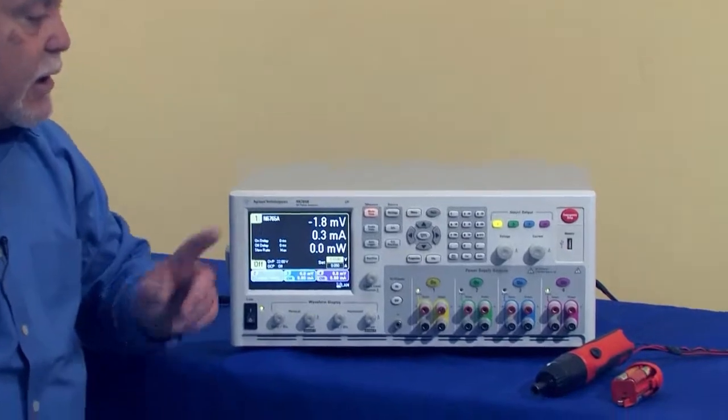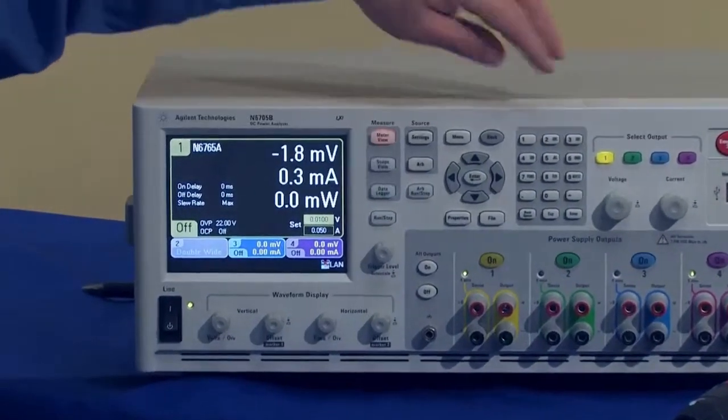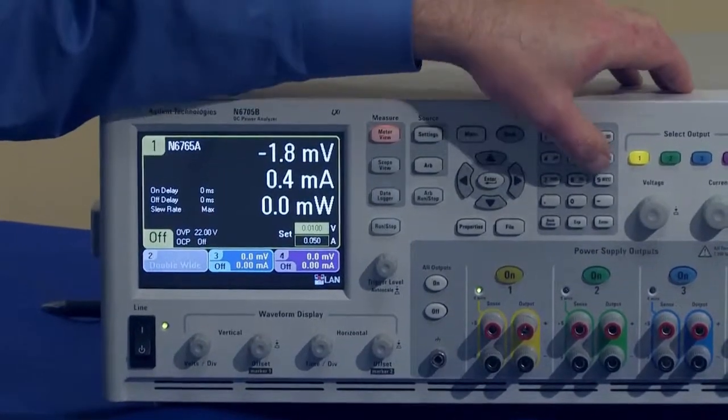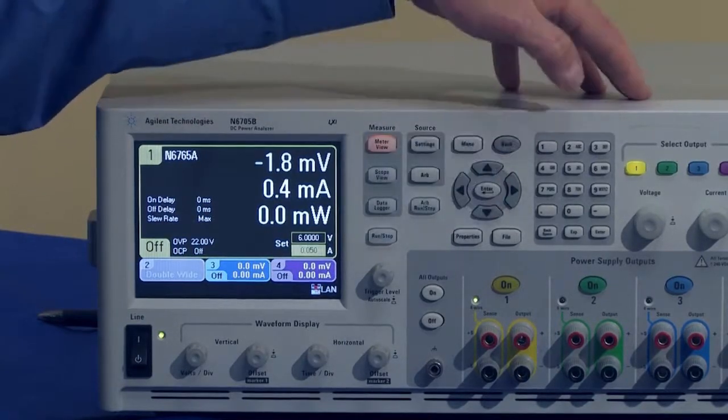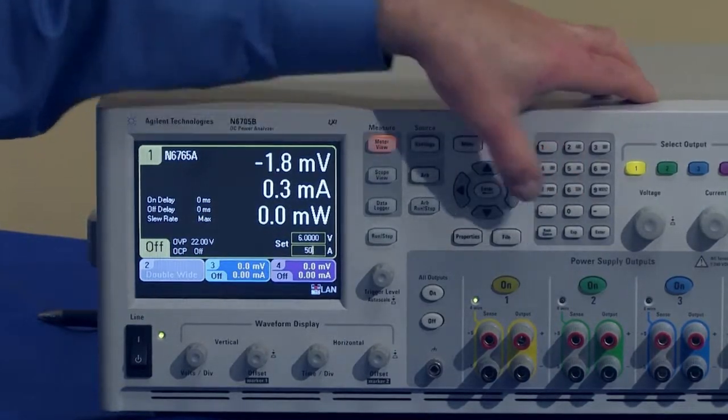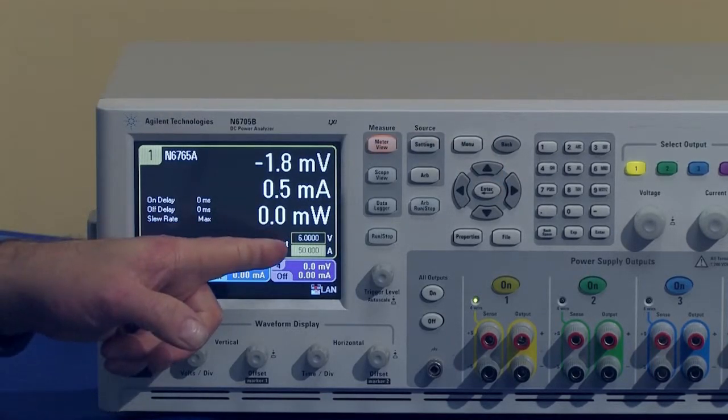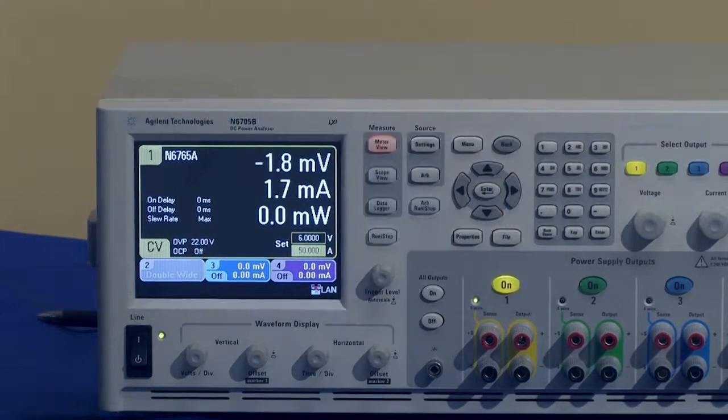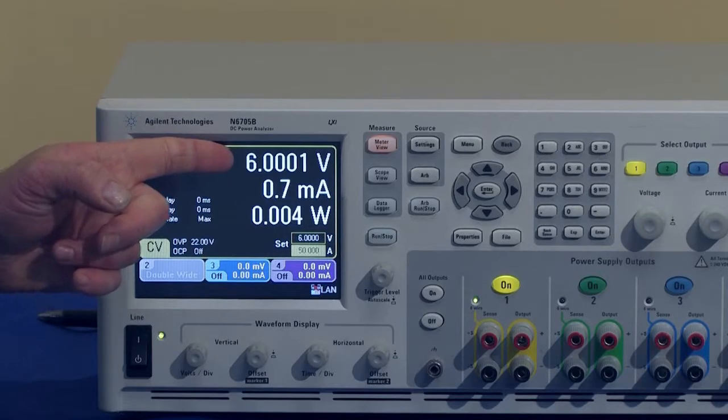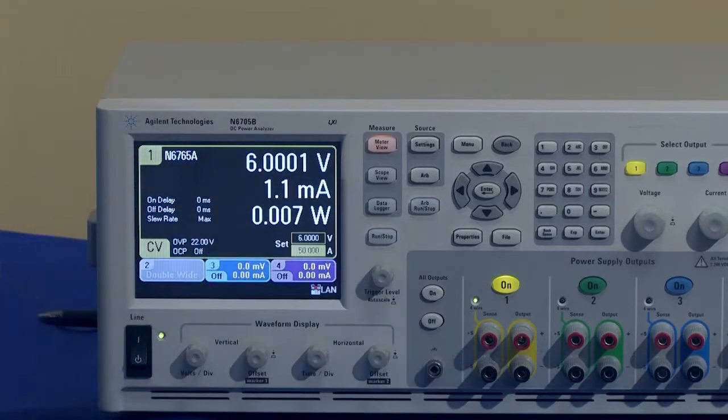So let me get started by setting up the instrument. The first thing I want to do is set the voltage and the current to power up the screwdriver. The voltage will be six volts because it's four AA batteries, so I enter six. Now it's set to six volts. And as far as the current is concerned, I'm going to set it to the maximum, which is 50 amps on this high power precision module. So now I'm set to six volts and 50 amps. I'm going to turn the power supply on and now I'll have power available to the screwdriver. The power supply is on. You can see it says six volts, but there's almost no current flowing because I don't have the motor running in the screwdriver.